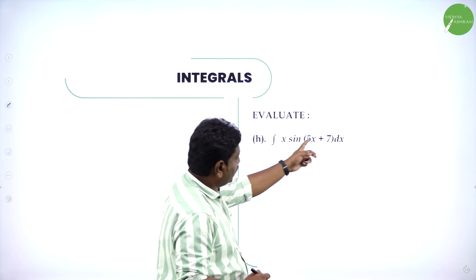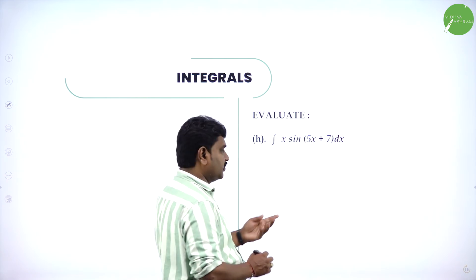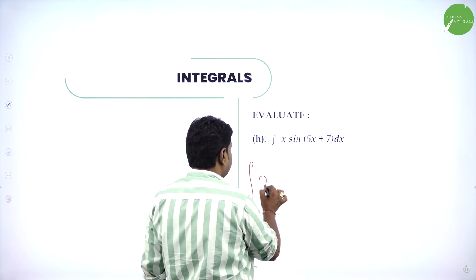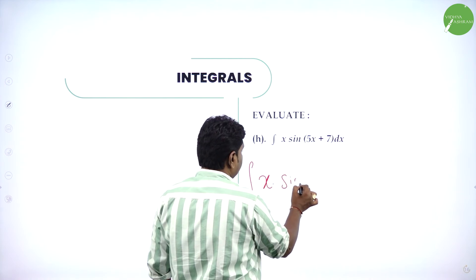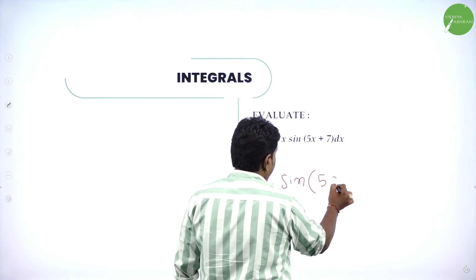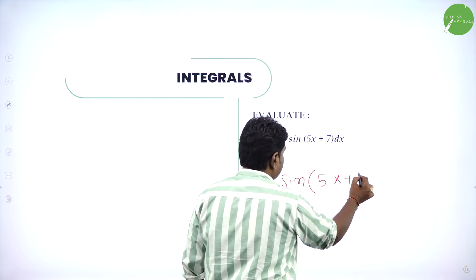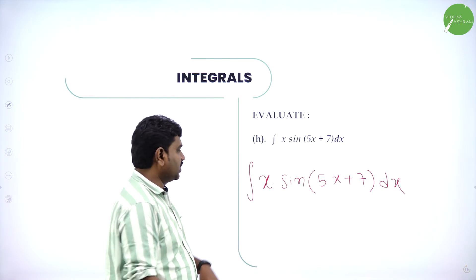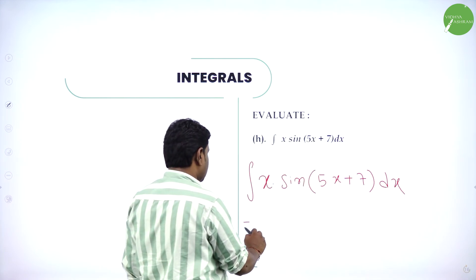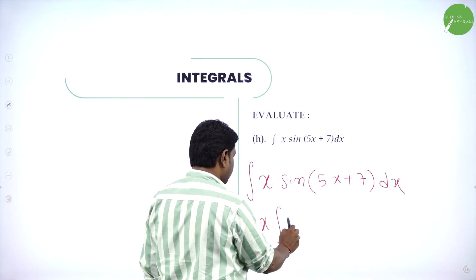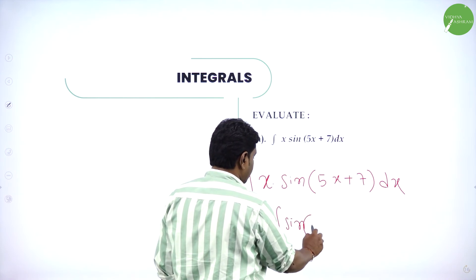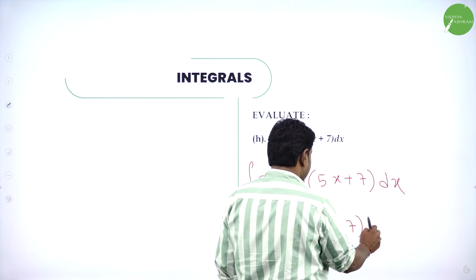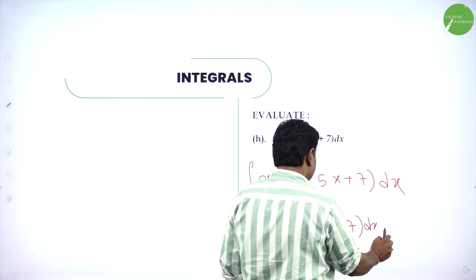Next: integration of x·sin(5x+7) dx. Again apply parts. First function is x, second function is sin(5x+7). Parts: first into integral of second — x into integral of sin(5x+7) dx — minus integral of integral of sin(5x+7) dx into derivative of x.